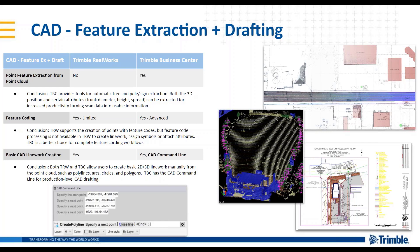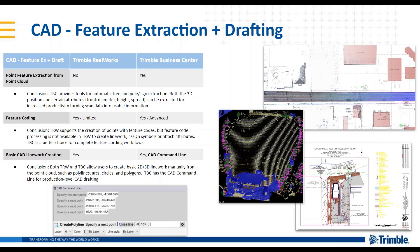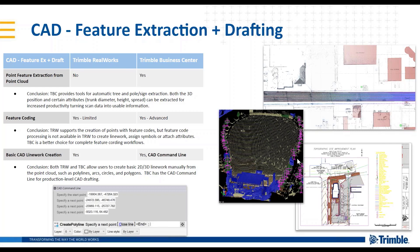The screenshot with the black background is Red Rocks Amphitheater in Morrison, Colorado, just outside Trimble's offices. It was collected with a TX8 before TBC even started to support the TX8. You can bring the data — in raw format or an exported industry-standard format — into TBC. The point cloud classification, shown with those little purple glyphs, works on any data format brought into TBC, which is great for mixed fleet regardless of whether it says Trimble on the box.